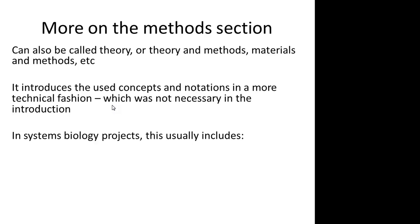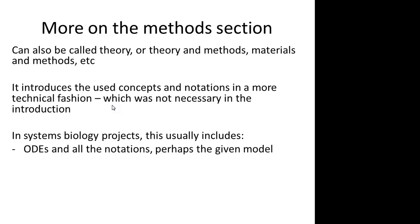The method section usually includes specifying ODEs — because typically you have built on ODEs — along with other frameworks if applicable. An ODE has many things that have names: parameters, states, functions, output equations, and so on. All of these you call something. You call the states X, for instance, and then you need to say that X represents concentrations of something, and that Y means the output — the measurement equation. All the symbols that you use need to be introduced, and this is typically done in the method section. You might also consider introducing the model here as well.